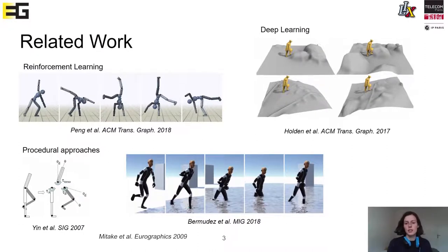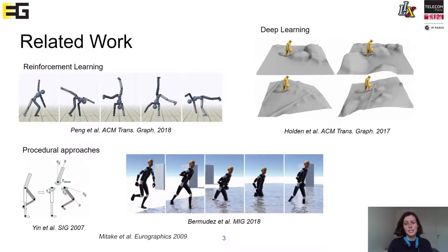Recently, Holden and colleagues published Phase-Functioned Neural Networks for Character Control, which also gives some very convincing results. But it uses classical deep learning and so needs a lot of data, and this data also needs to exist. So if we want, for example, in a video game to create an imaginary environment, it won't be able to train on such data.